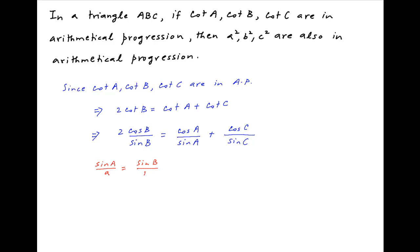Now recall the sine rule which states that sin A upon A is equal to sin B upon B is equal to sin C upon C. Let us assume that each of these terms is equal to k.